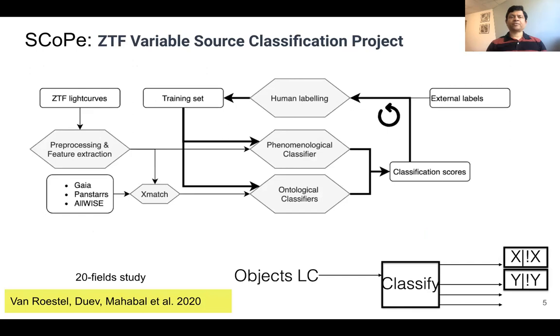This diagram indicates how we start from ZTF light curves and go on to do various aspects of SCoPe. We have various external data, which we use in certain cases. Those are cross-matched with the data we have. The external labels have been used for labeling initially, which form the training set. And then those are the ones that get used with phenomenological and ontological classifiers. Those lead to classification scores. The details of many of these things are based on a 20-field study.